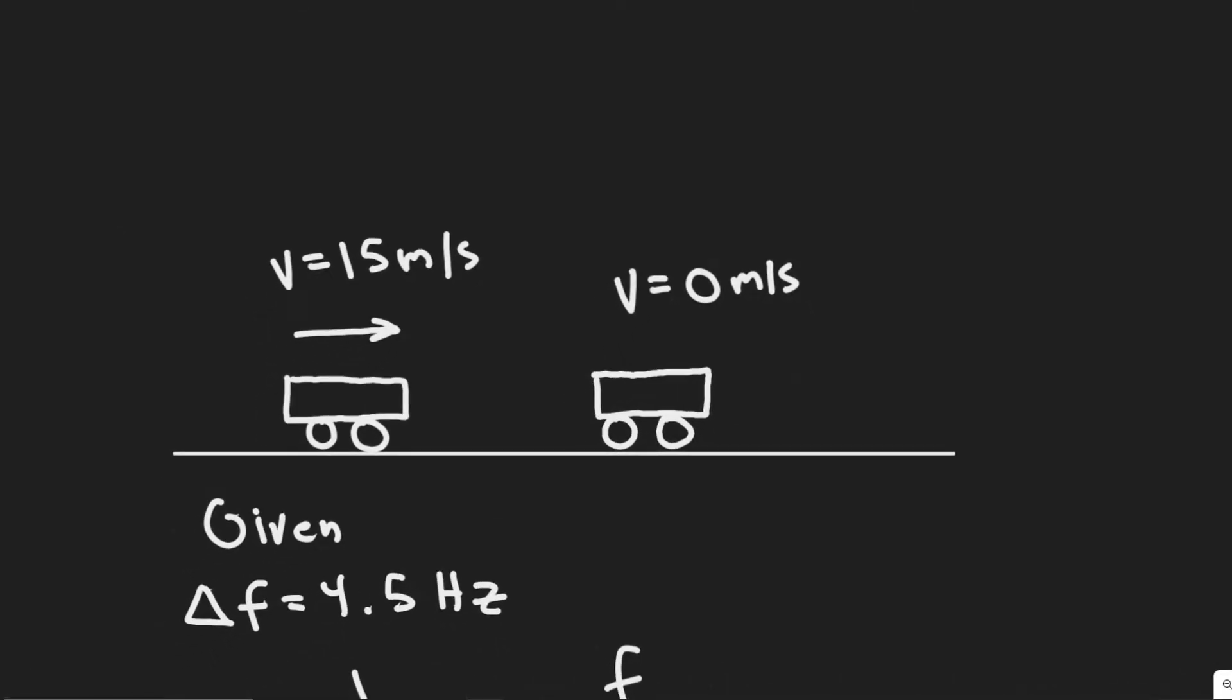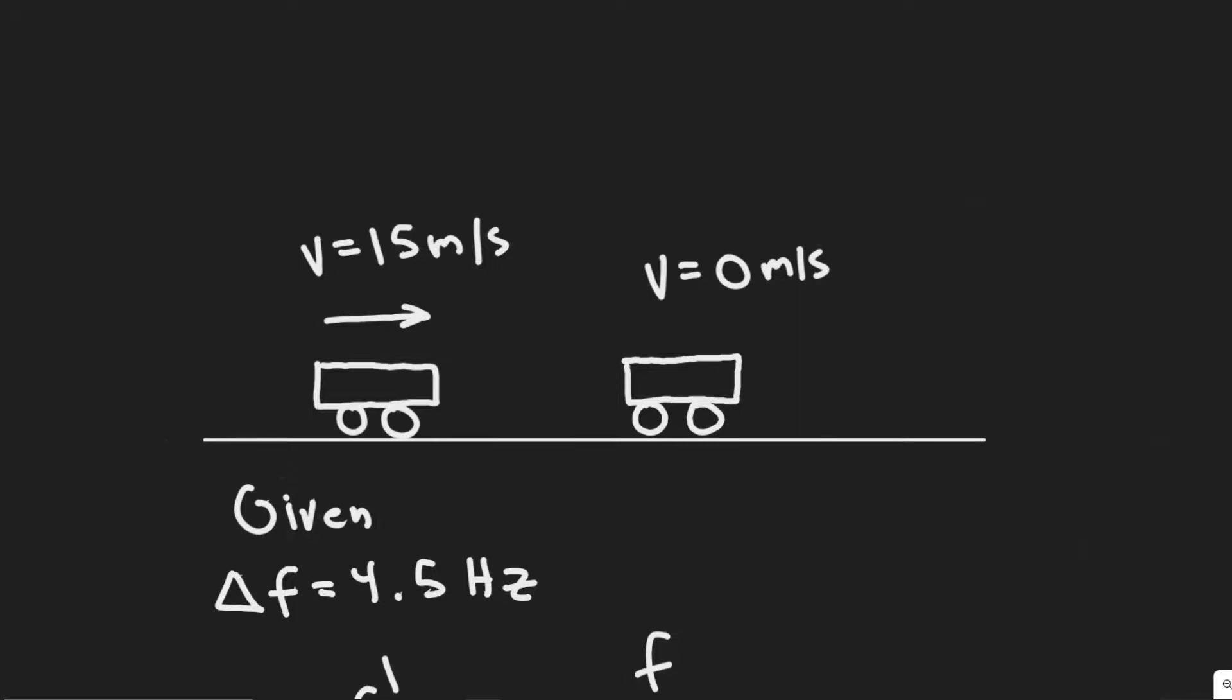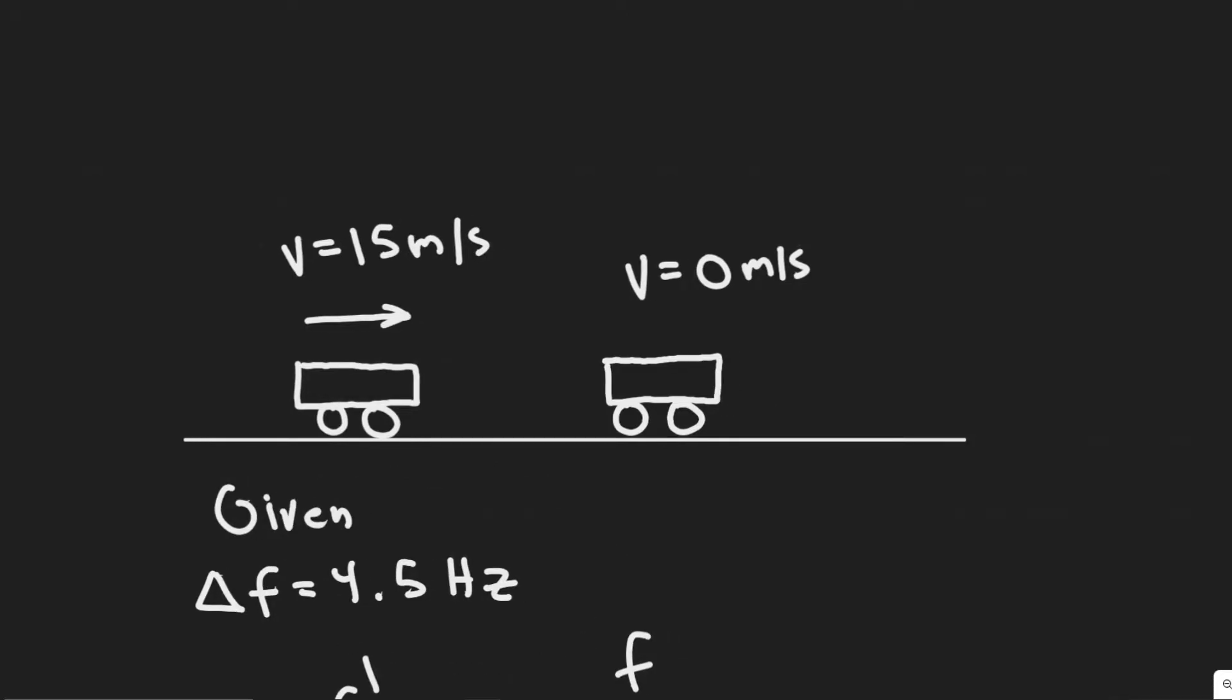The final piece of information that we're given is the beat frequency. Let me explain what the beat frequency is. We know it's 4.5 hertz and what it is is essentially the difference between the frequency that an object emits - in this case we could say the frequency that each of them emit, which would be F - the difference between that frequency and the frequency that the object interprets or hears or receives. So we know that this car that's going 0 meters per second hears a beat frequency of 4.5 hertz.